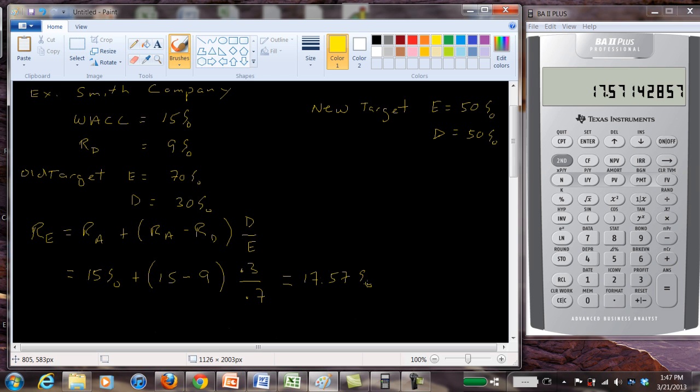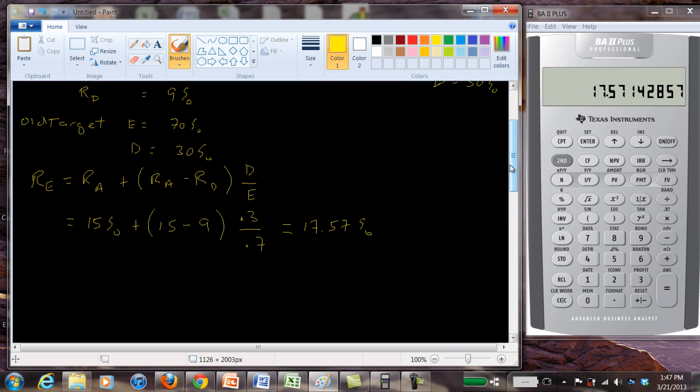So if we're using a target debt equity ratio of 70% equity and 30% debt, equity holders, stockholders, will require 17.57% return. Now let's see what happens in the case where we have a debt equity ratio of 0.5 for debt and 0.5 to equity.